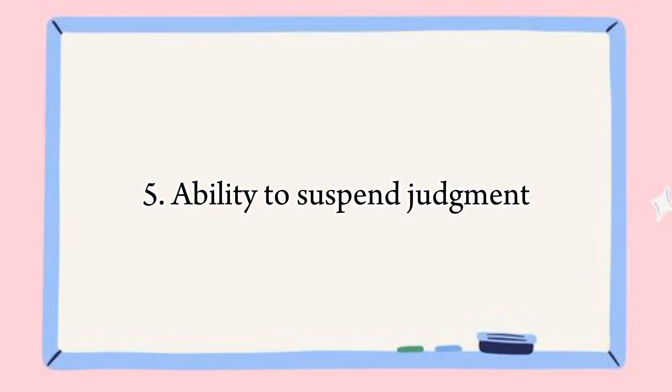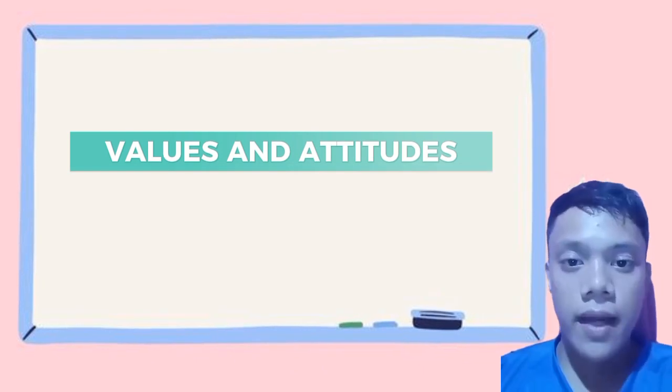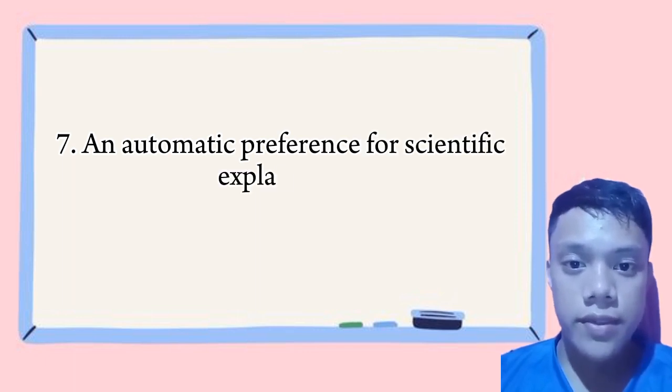Fifth, ability to suspend judgment — scientists are willing to withhold judgment until they have enough evidence to make a decision. For example, an astronomer studying a distant planet might wait until more data is collected before making conclusions about its composition. For the next values and attitudes, we have preference for scientific explanations.